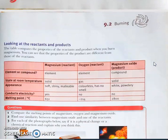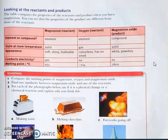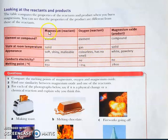Now, looking at the reactants and products — this table compares the properties of the reactants and products when you burn magnesium. We can see the properties of the products are different from those of the reactants. While burning magnesium, there are two reactants: magnesium and oxygen. The properties of magnesium are: it is an element, it is a solid at room temperature, its appearance is soft, shiny, and malleable because it is a metal.